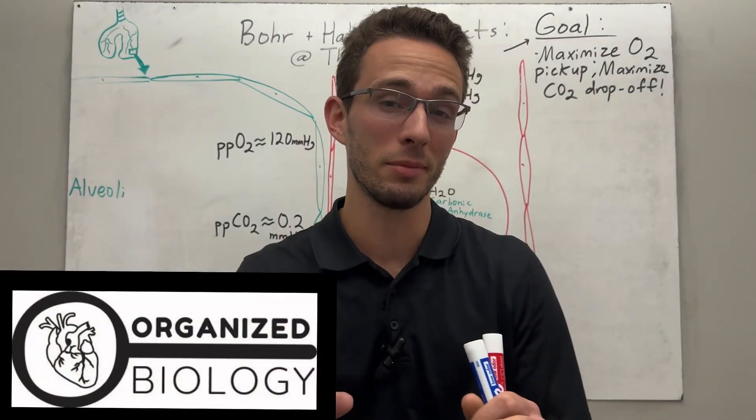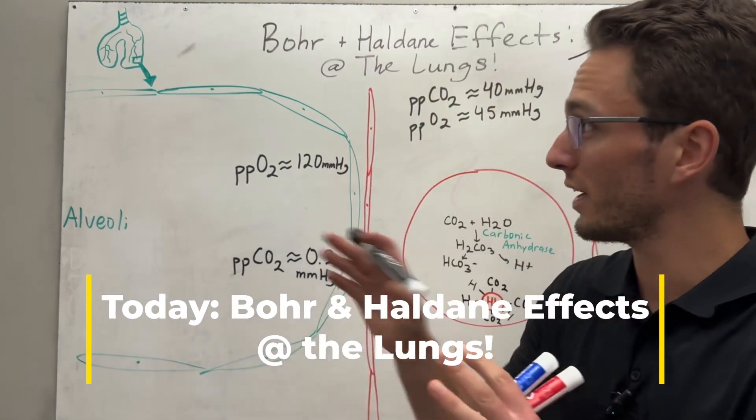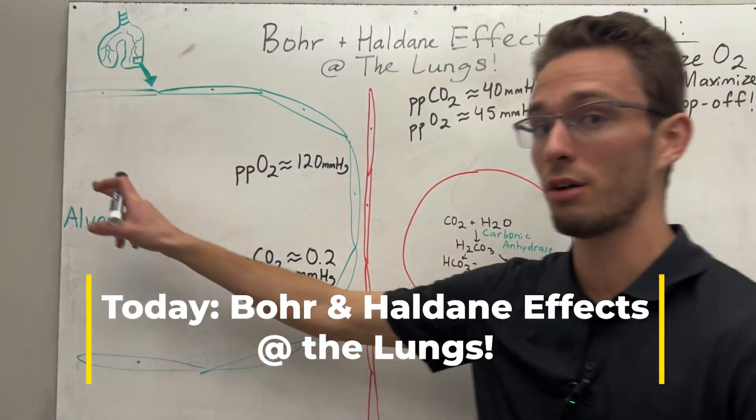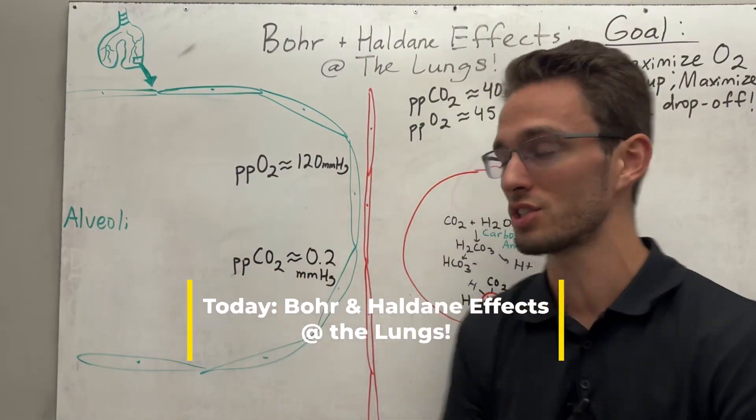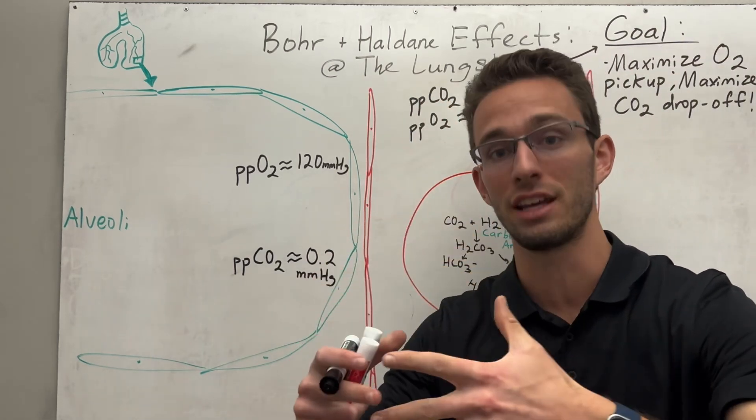Hey everybody, Organized Biology here, and today we're talking about the Bohr and Haldane effects, but at the lungs. So when we zoom in at the lungs, we're going to look at the alveoli, the little air sacs of the lungs, as they're butted up against the capillaries that are lining those alveoli.